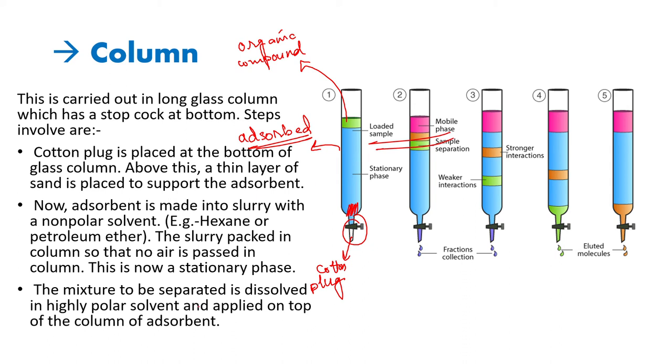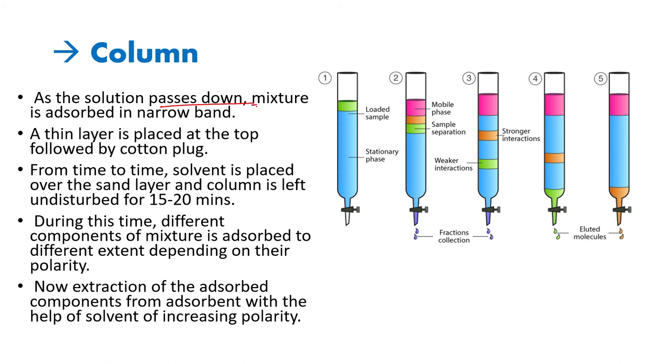The mixture to be separated is highly polar and applied on top of the column of the adsorbent. As the solution passes down, the mixture is adsorbed in a narrow band. When we add the mobile phase, a solvent, on top of our organic compound, the adsorbent will adsorb the organic compounds at different rates, which is dependent on their polarity. The organic compound breaks down into different components. Now extraction of the adsorbed components from the adsorbent occurs with the help of a solvent of increasing polarity.